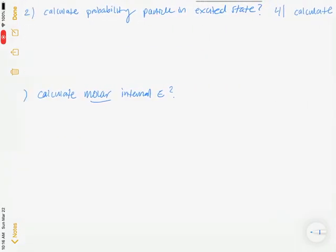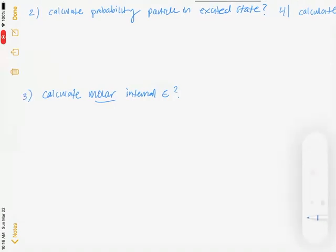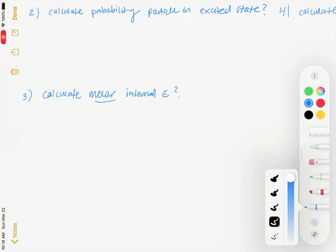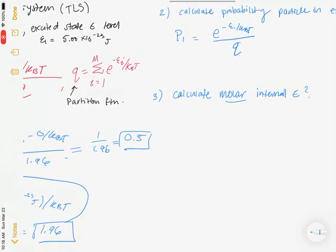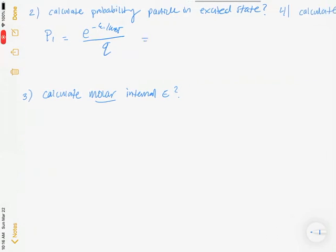For the next problem, we calculate the probability that the particle is in the excited state. Using the same equation, P(1) = e^(−E₁/k_BT) over Q, where Q is 1.96. We compute e^(−5×10⁻²³ J / k_BT), where k_B is the Boltzmann constant equal to 1.38×10⁻²³ J/K.